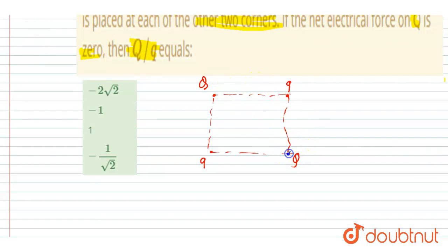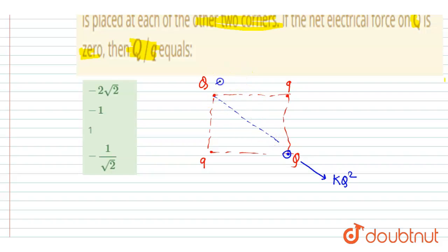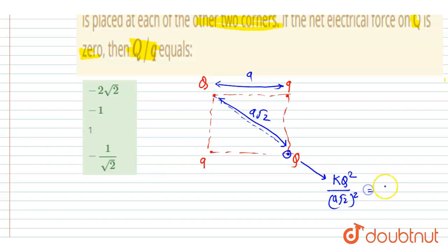Taking one of the capital Q charges, because of the other capital Q at the opposite corner, it is acted upon by a force. If the side of the square is a, the diagonal distance is a√2, so this force is kQ² / (a√2)² = kQ² / 2a².